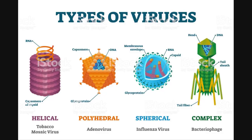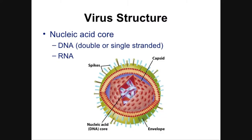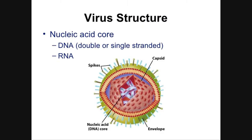The reason why viruses vary in shape, though, is simple. It is all due to the size of the nucleic acid core of the virus. For example, some viruses, such as the tobacco mosaic virus, have a long strand of RNA that is best covered by a long, helical-shaped capsid.